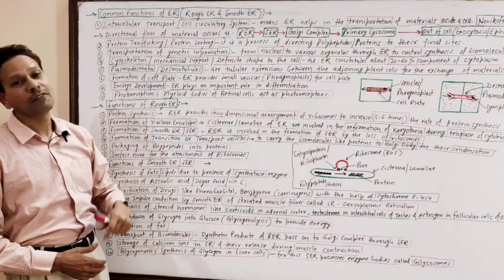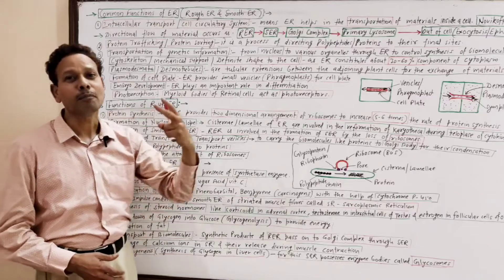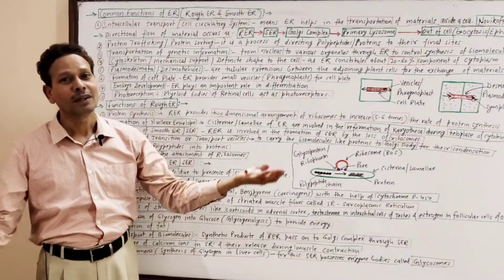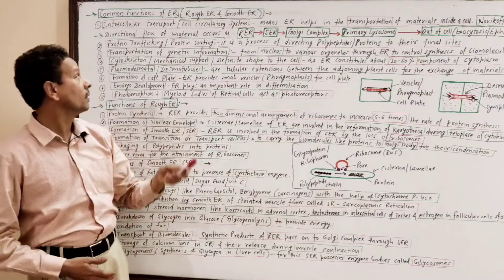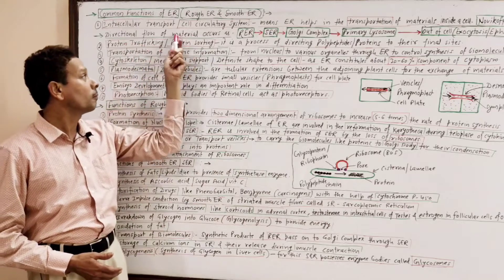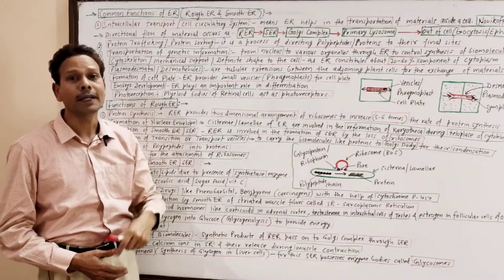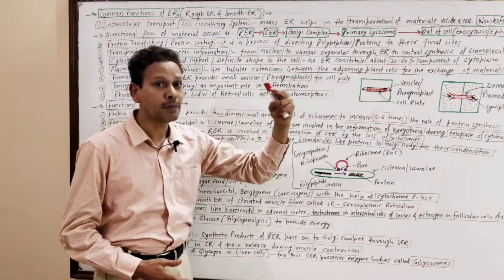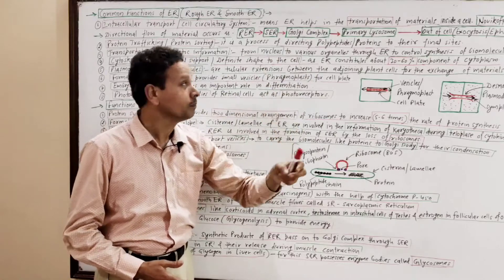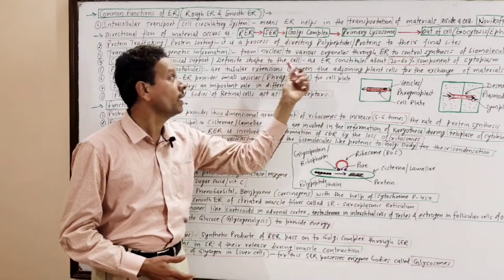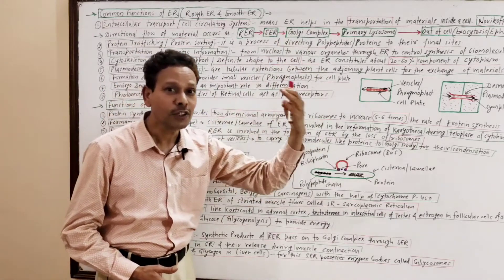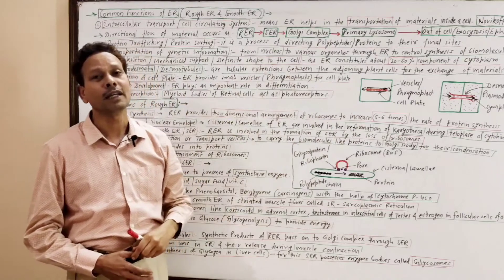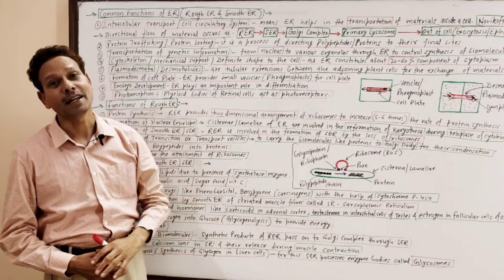Another important common function of ER is Protein Trafficking, also called protein sorting. The endoplasmic reticulum provides direction to polypeptide chains and proteins, directing them to their final site.